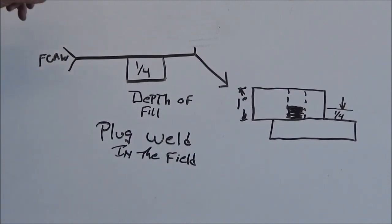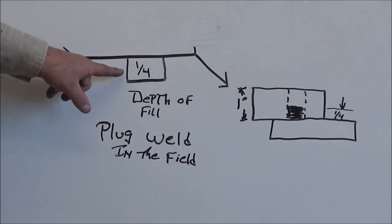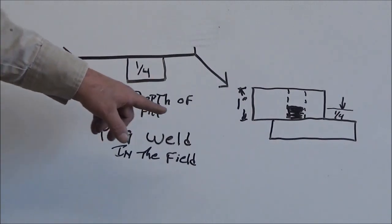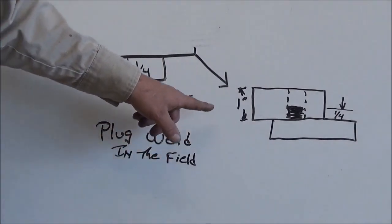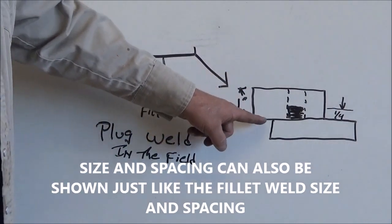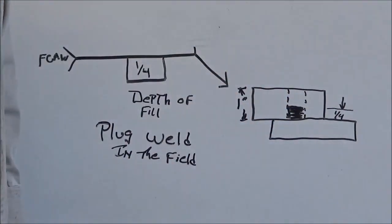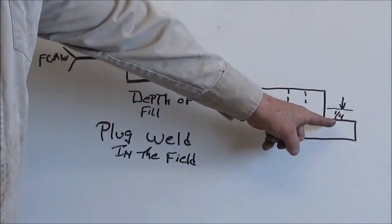Now, in this case here, this is going to be on the arrow side because the weld symbol is below the reference line. There is a figure of one quarter inch in here. That means that's the depth of fill. So they want this filled up one quarter inch, and if you take a look over here, I've kind of illustrated that by having a one inch plate with a hole in it.